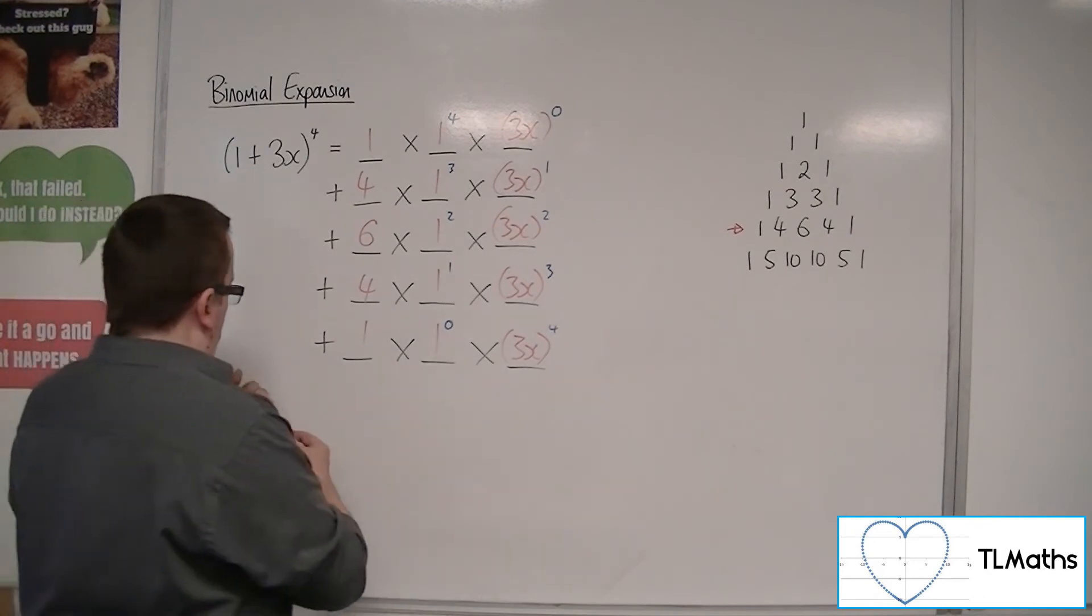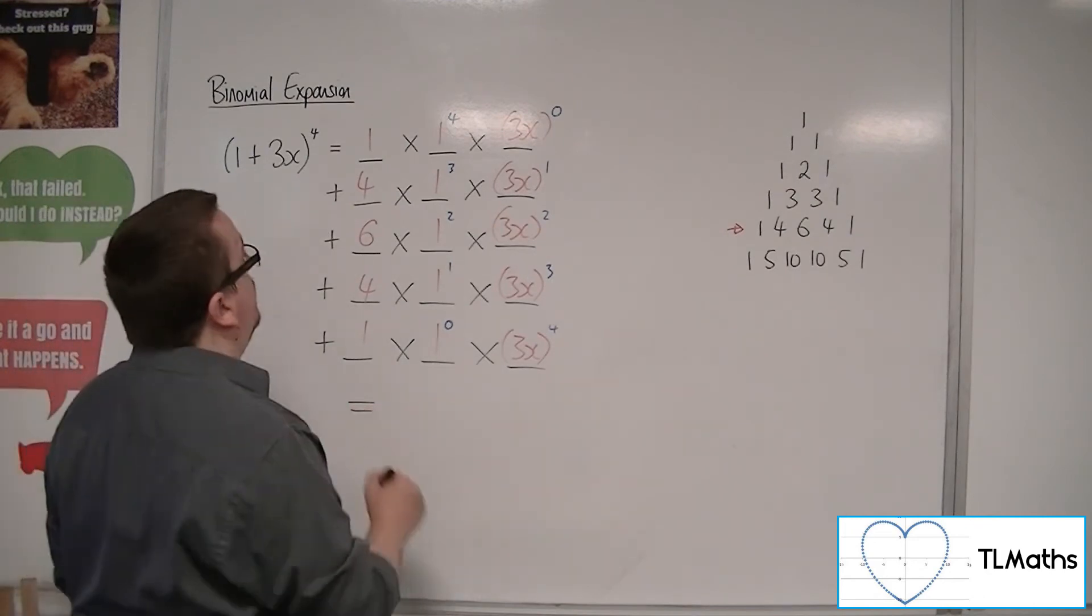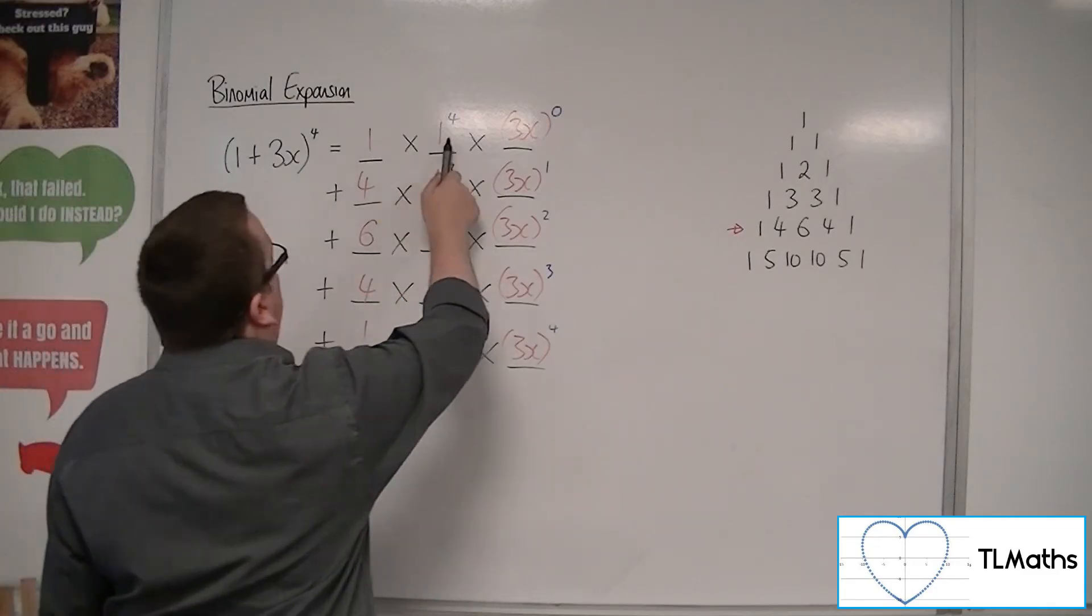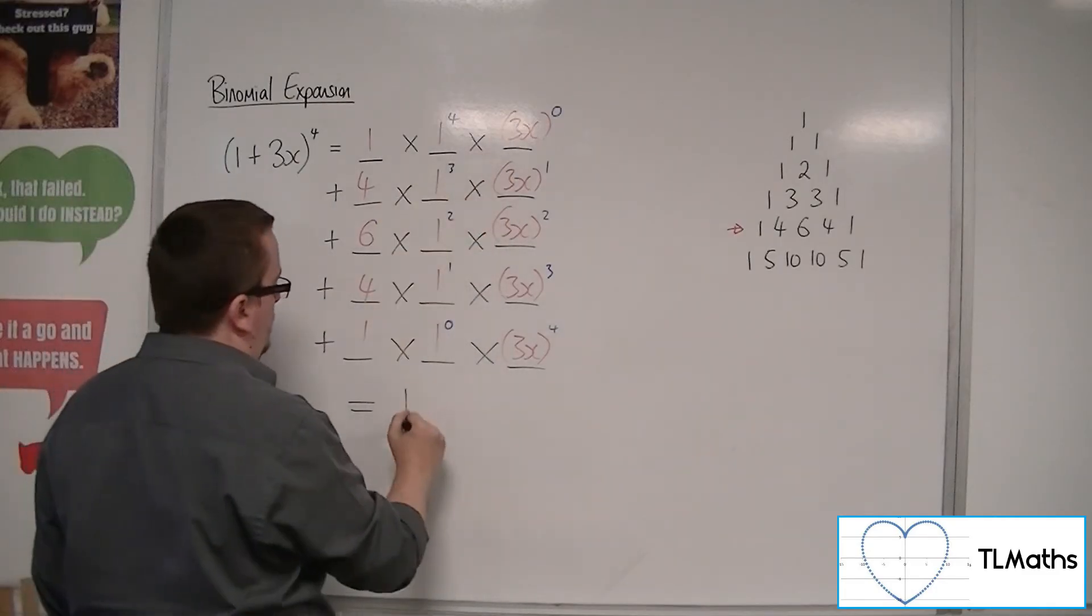So, we're now ready to work our way through. This first term, we've got 1 × 1 × 1, which is 1.